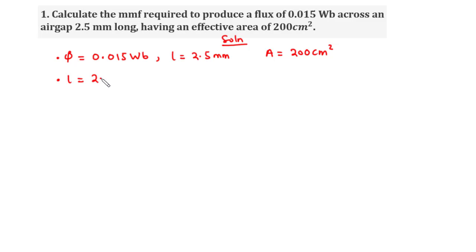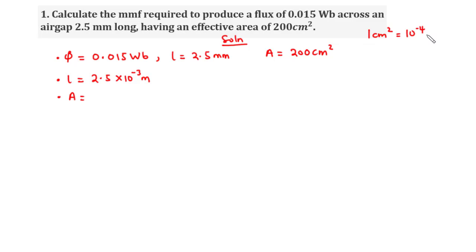So L becomes 2.5 times 10 exponent negative 3 meters. For the cross-sectional area, we know that 1 cm² equals 10 exponent negative 4 m². So we multiply 200 by 10 to the power negative 4, giving 200 times 10 exponent negative 4 m².